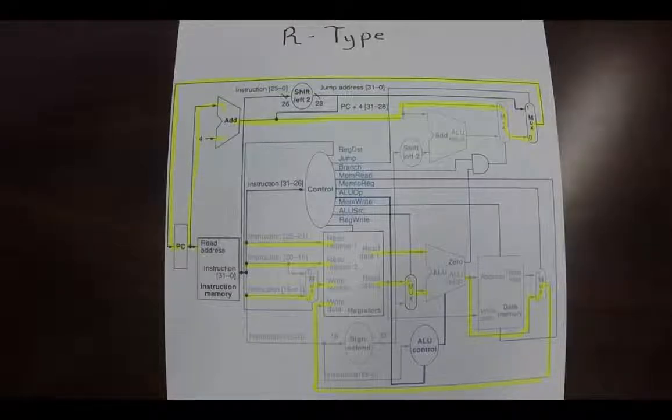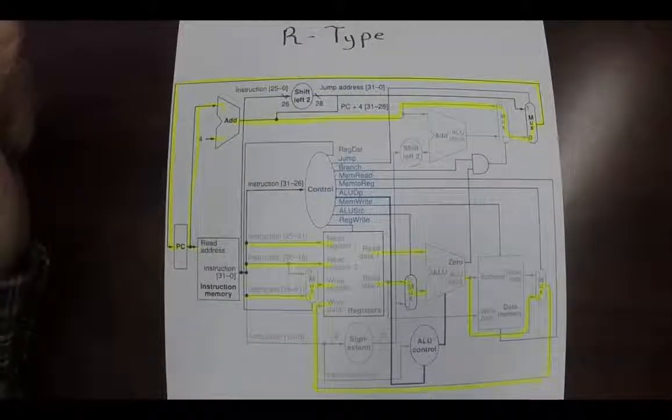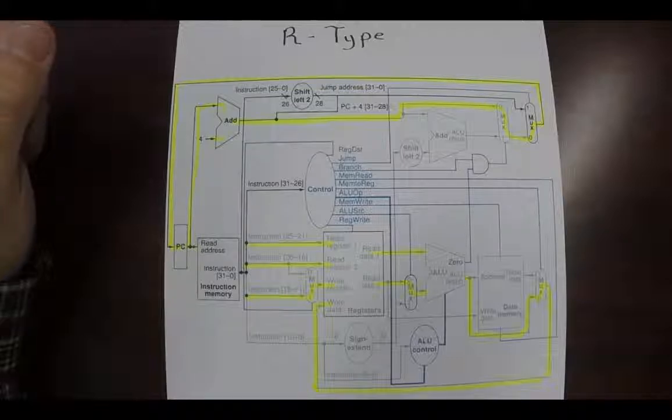I've been asked to explain the single cycle architecture, the control path and the data paths for the different instruction types. So this is my short presentation on it.